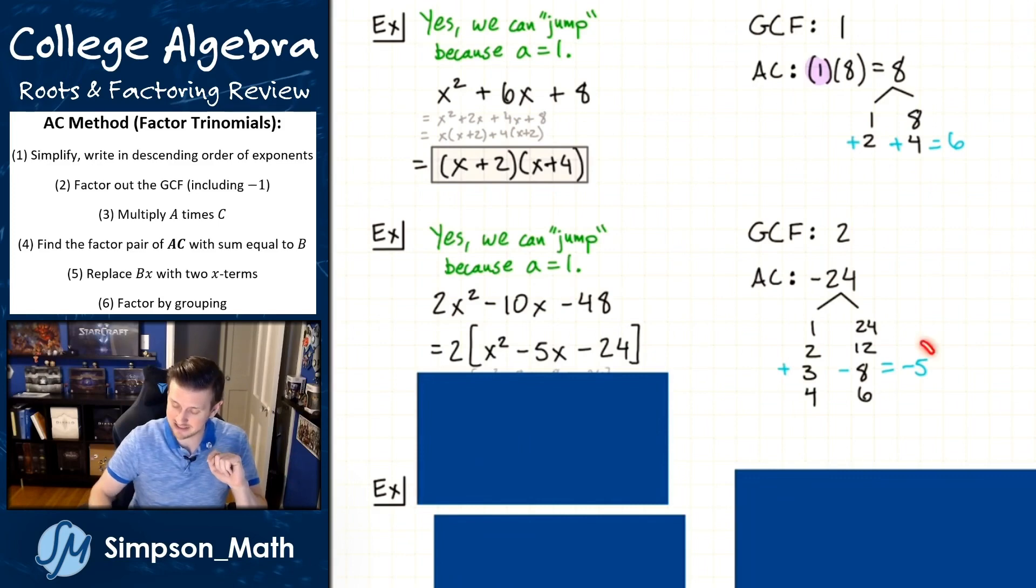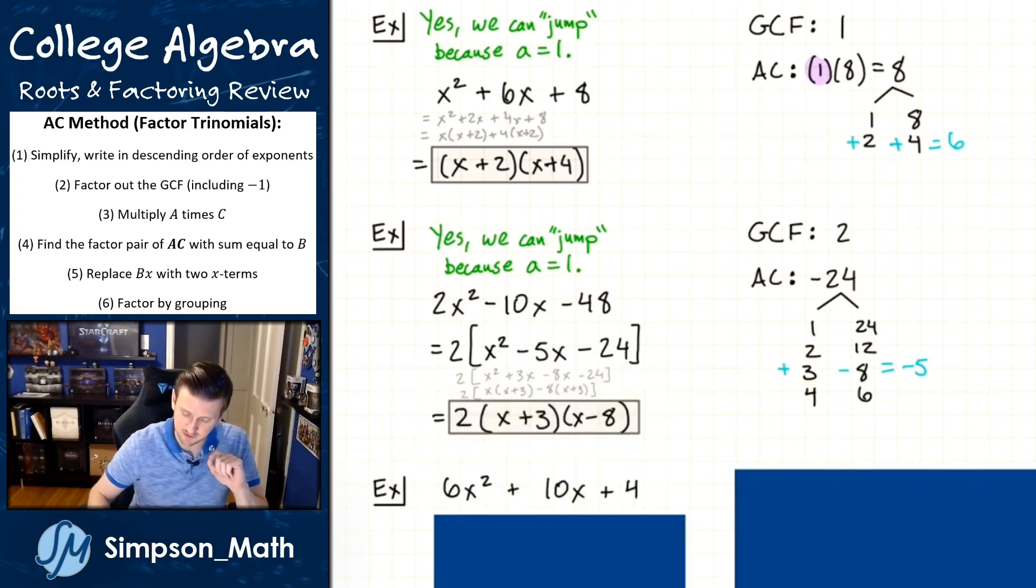So then I find that my factor pair is three and negative eight, because three minus eight is negative five. Three times negative eight is negative 24. Again, always be mindful about your signs. So then I can jump and I know directly from this, I'm going to have x + 3, x - 8, end of story.